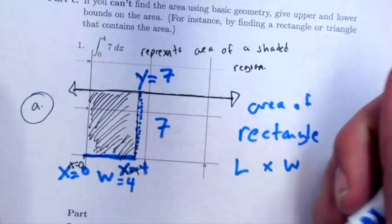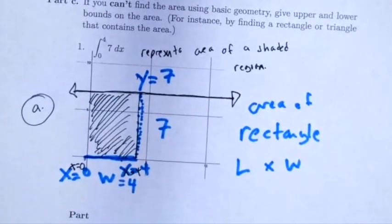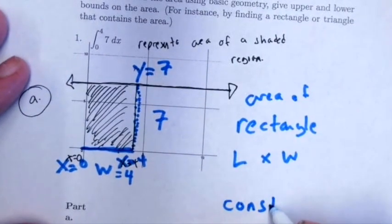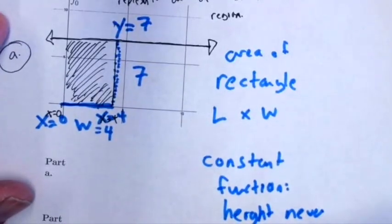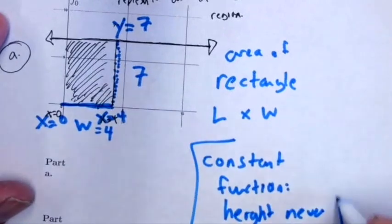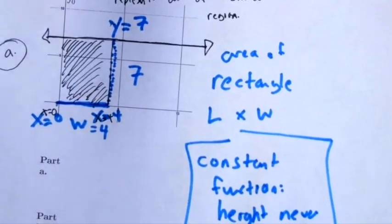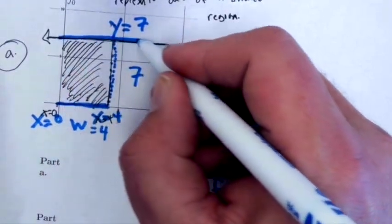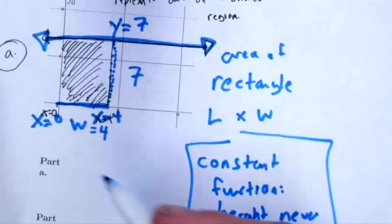The reason that I can get away with this is that this is a constant function - the height never changes. I can't get away with this in general and it gets more complicated than this, the height will change. But in this specific situation where I'm just dealing with a straight line as the function, I can find the area.